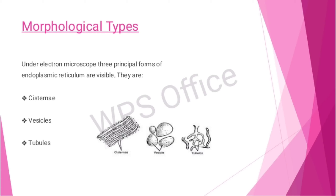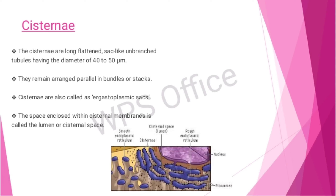Under the electron microscope, three principal morphological forms of endoplasmic reticulum are visible: cisternae, vesicles, and tubules. Cisternae have a diameter of 40 to 50 micrometers and remain arranged parallel in bundles or stacks. Cisternae are also called ergastoplasm. The space enclosed within cisternal membranes is called the lumen or cisternal space.